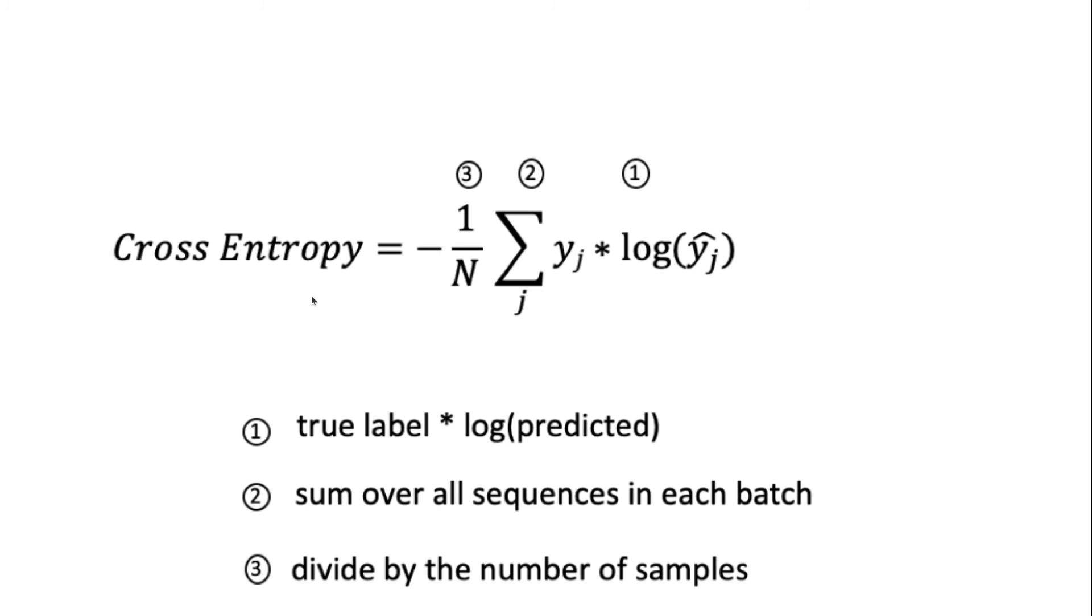So this is just if you want to review the cross-entropy. This is the formula for cross-entropy. It's always computed on a true label versus predicted label. So the true label into the log of predicted labels, and then you sum it over all the sequences in each batch and then divide the whole thing by the number of samples. So I'm not getting into the details of cross-entropy. You could refer to other resources.